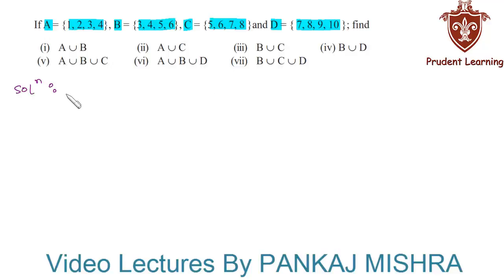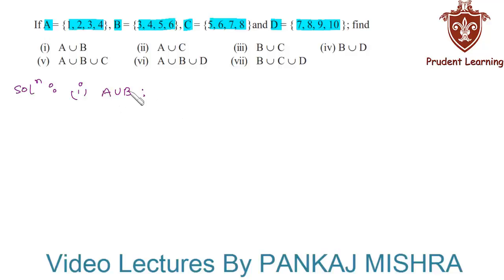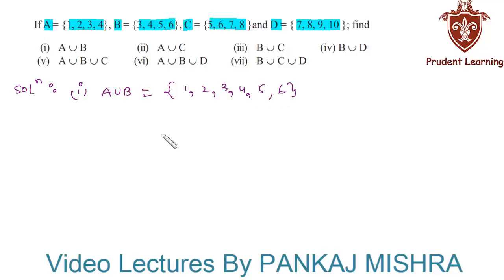In the first section we need to find A union B. We know that it is nothing but a set containing all the elements that are present either in A or in B. So this is equal to {1, 2, 3, 4, 5, 6}.